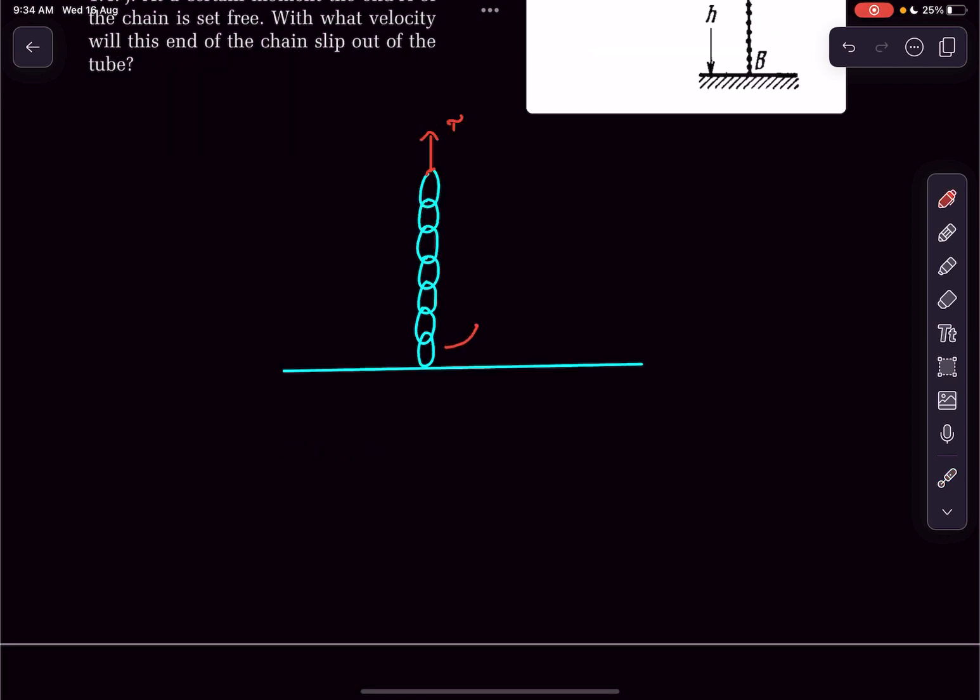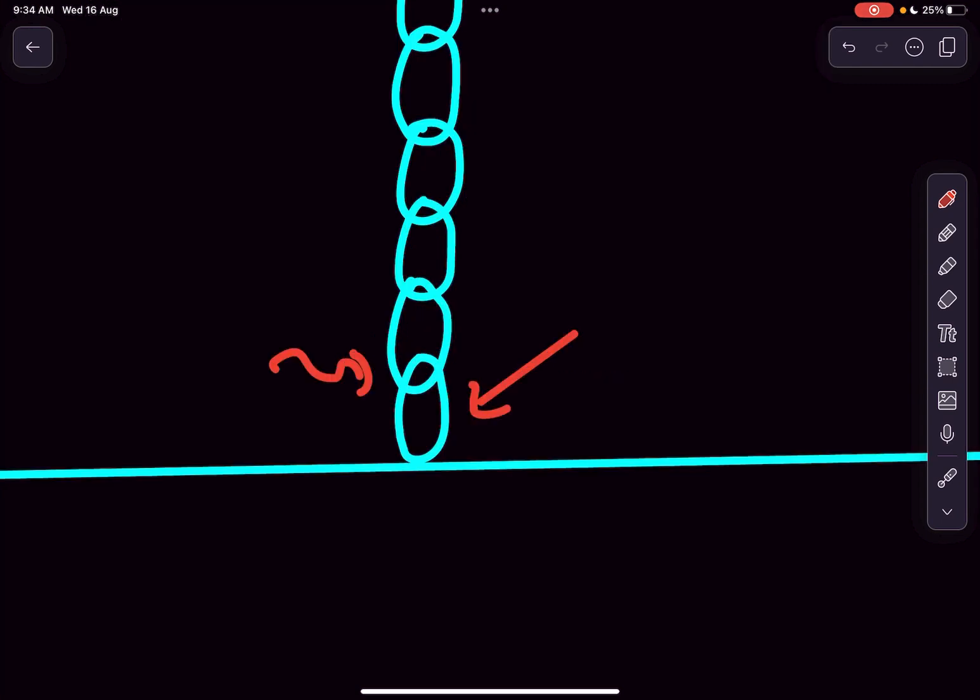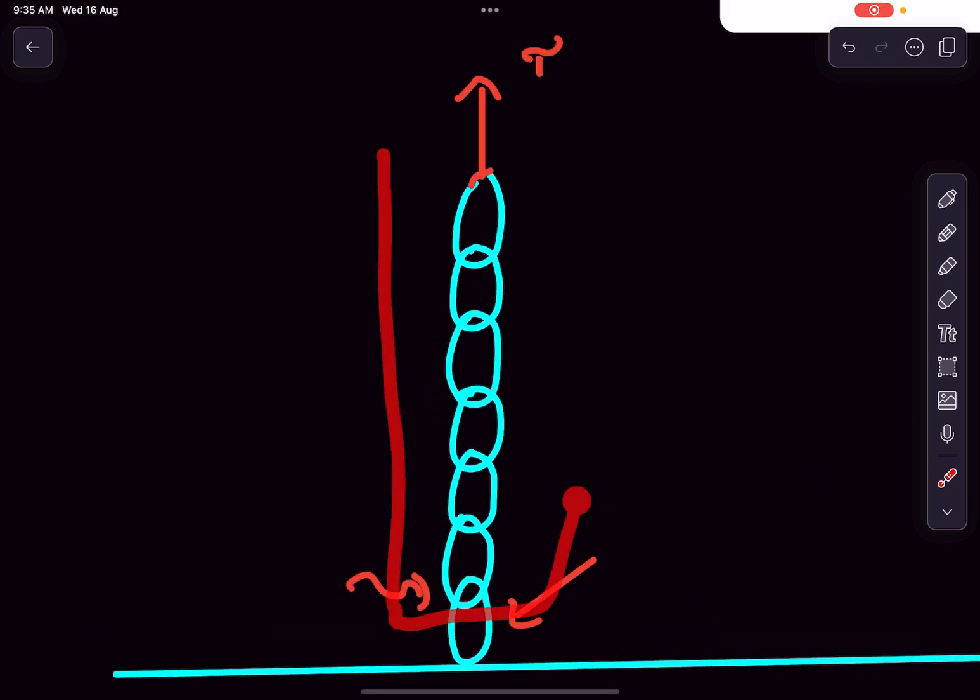When the bottommost link touches the ground, the contact between these two links at the bottom is broken. They are not rigidly fixed to each other, so you can move these links around. When the bottommost link touches the ground, the contact between these links is broken, and there is literally no force acting on this part of the chain.